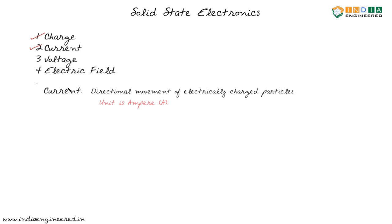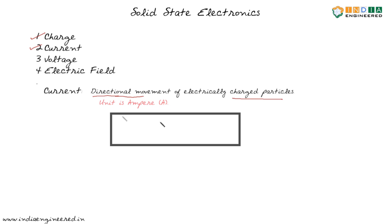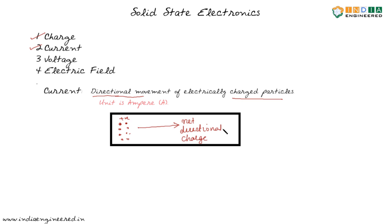We have seen charge; now we will take a look at what is current. Current is the directional movement of electrically charged particles — that means there has to be some directional movement and there has to be the movement of charged particles. So we have some material like this, and suppose we have a lot of positive charges here, moving in this direction. What we have here is a net directional movement of charged particles, so we can say that there is a current flow.